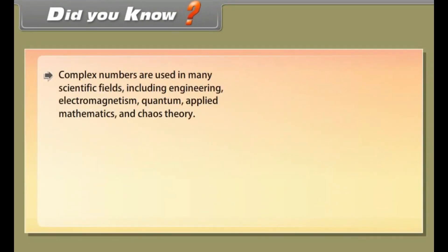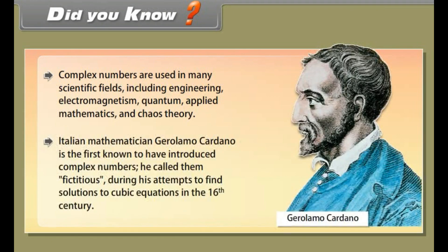Did you know? Complex numbers are used in many scientific fields including engineering, electromagnetism, quantum mechanics, applied mathematics, and chaos theory. Italian mathematician Gerolamo Cardano is the first known to have introduced complex numbers — he called them fictitious — during his attempts to find solutions to cubic equations in the 16th century.